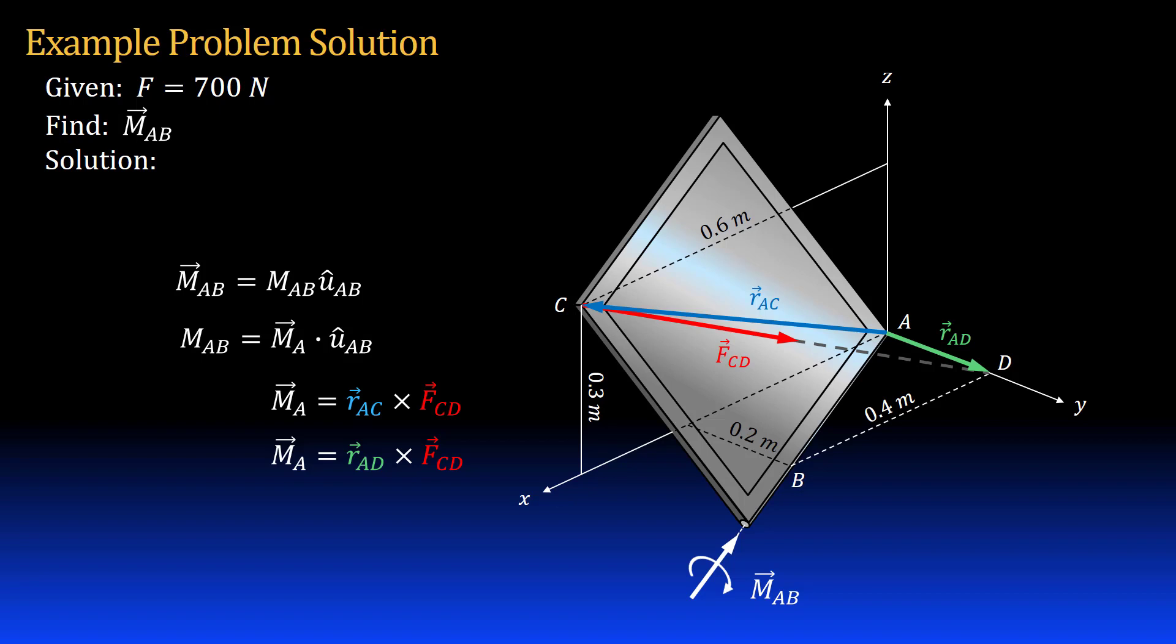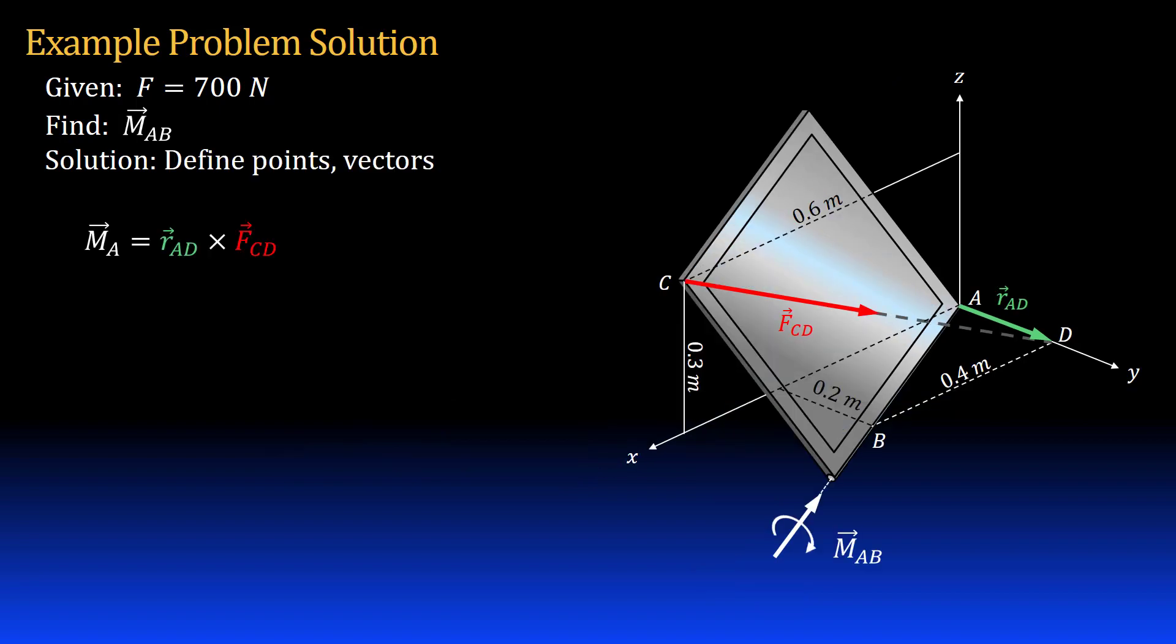Either option works since they both originate at the point we are taking the moment, point A, and both points C and D are on the line of action of the force. I will take the second option and use position vector AD since it will be easier to write.